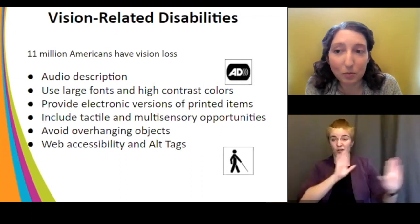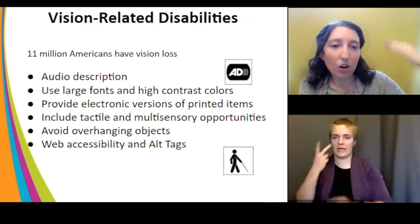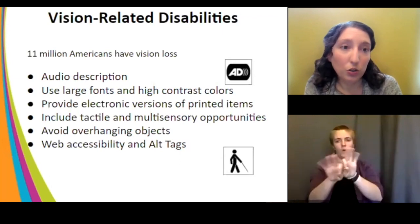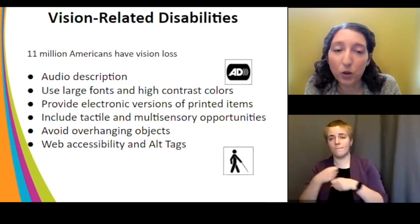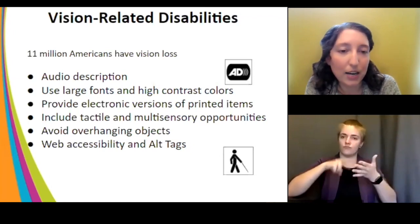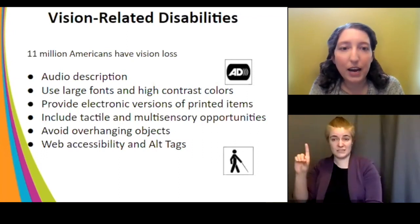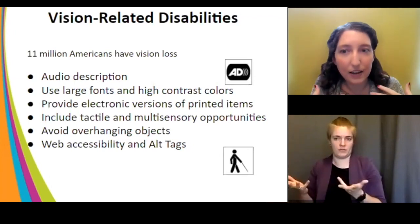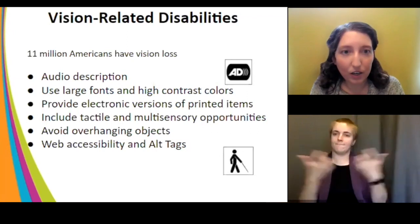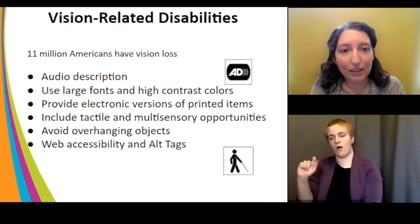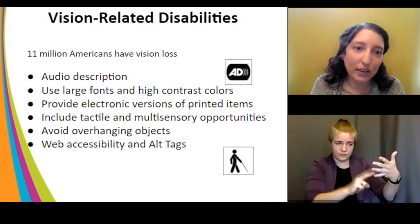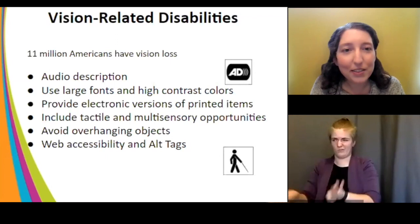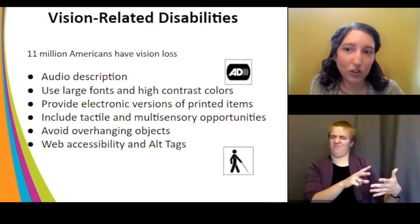In galleries, avoid objects hanging over walking paths that aren't detectable by a cane on the ground. Web accessibility is huge — so much is online now. Make sure your website is readable by a screen reader, a tool that reads all text aloud for people with vision-related disabilities. Also ensure all images have descriptive alt tags, because when a screen reader encounters an image, it reads aloud whatever is in the alt tag. Nonsensical or missing alt tags are useless and annoying for screen reader users.